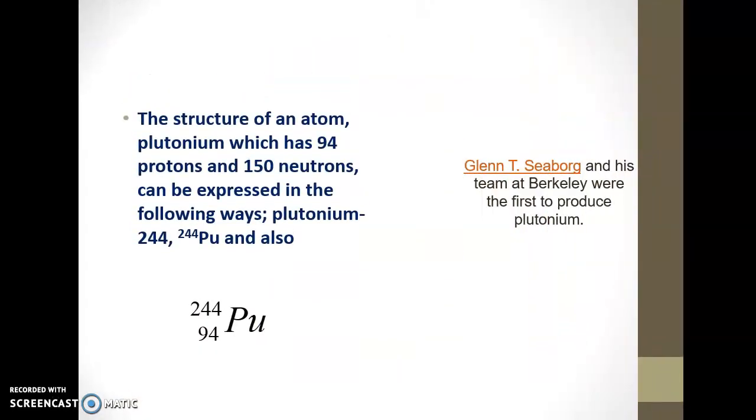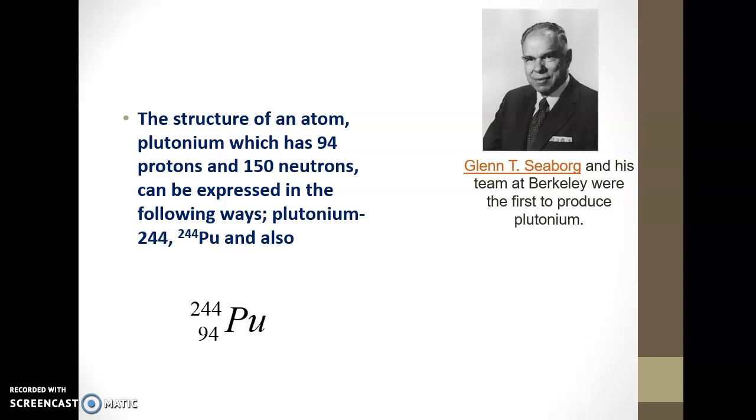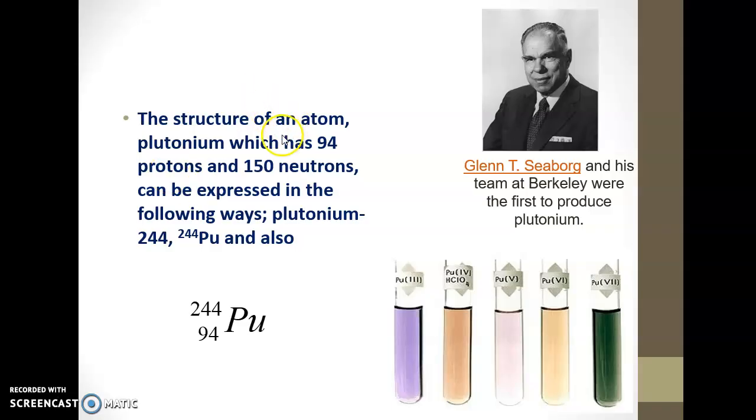For example, let's look at plutonium. The structure of an atom plutonium has 94 protons and 150 neutrons. So it has what is the number of A? Proton plus neutron, 244. And the number of protons, Z, is 94. So this is the only way that you can write or represent the element. This format is called isotopic notation.